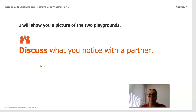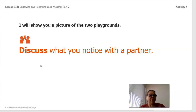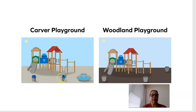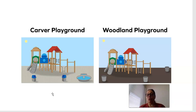I'm going to show you a picture of the two playgrounds that the principal sent to me, and we are going to discuss it. You can talk to a partner, talk to me, or talk to your stuffy. We're going to see: how are they different? How are they the same? What can we notice? What observations can we make? The two playgrounds have different names. One is called the Carver Playground and the other is Woodland Playground.